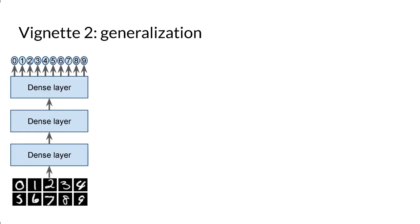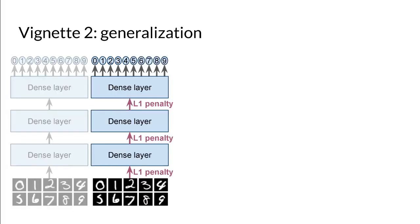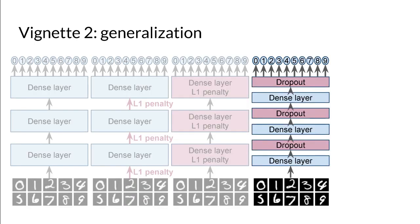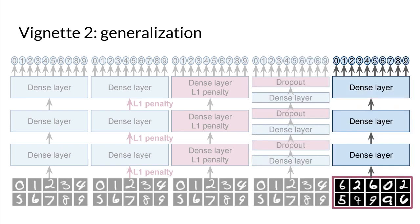In the next vignette, we compare five classifiers with varying generalization performance. A standard network, a network with L1 penalties on the weights, a network with L1 penalties on the activations, a network with dropout applied after each layer, and finally, a network training on images with random class labels.